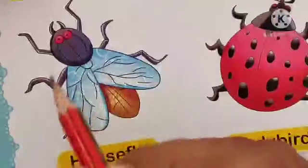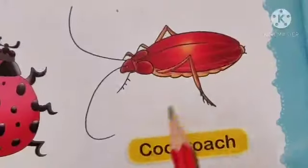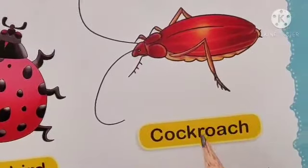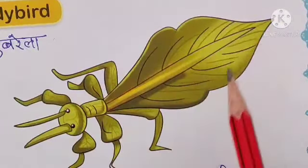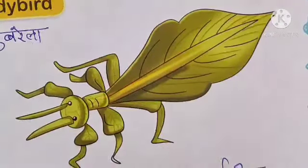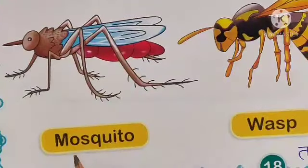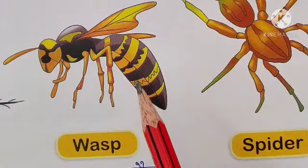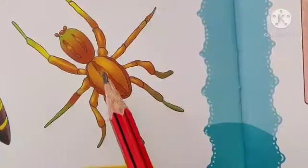Today's new lesson is Lesson 14 — Insects, spelled I-N-S-E-C-T-S, meaning कीट in Hindi — or what we locally call 'हाबू'. In this lesson we will learn about different types of insects: Housefly means मक्खी, Ladybird means गुबरेला (red colored), Cockroach means तिलचट्टा, Beetle means भ्रंग, Leaf Insect means पर्ण कीट (looks like a leaf), Mosquito, Wasp means ततैया, and Spider means मकड़ी.